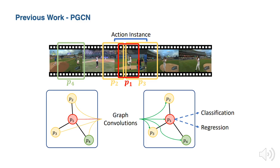GTAN is an efficient framework that collects snippet-snippet correlations. However, in the PGCN work, the authors also propose to exploit proposal-proposal relations using graph convolutional networks. They construct an action-proposal graph where each proposal is a node and relations between two proposals are edges, using two types of relations: one for capturing context information for each proposal, and another for categorizing correlations between distinct actions. Then they apply GCNs over the graph to model relations and learn powerful representations for action classification and regression.